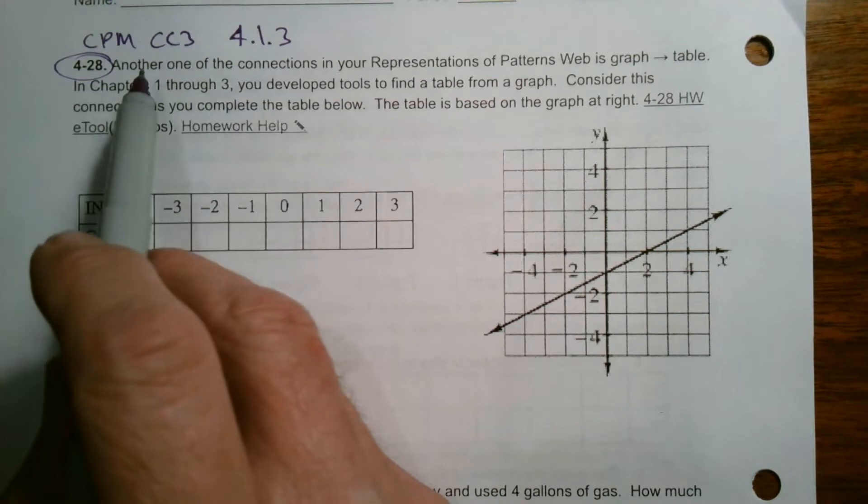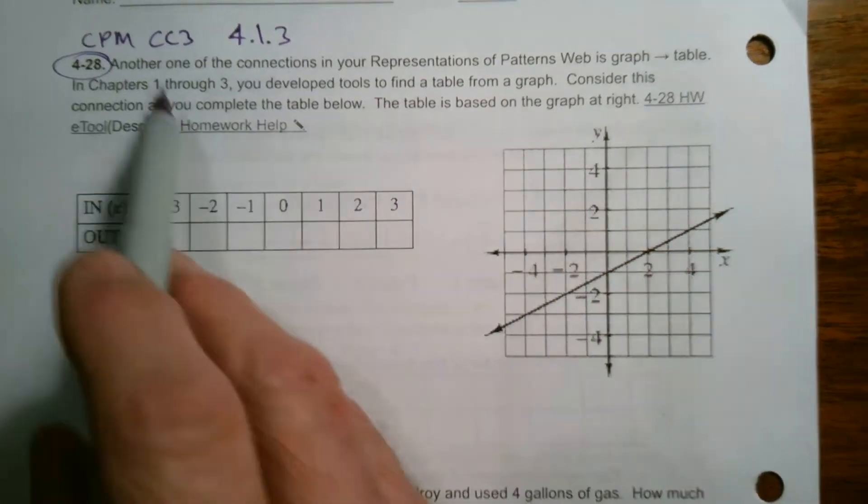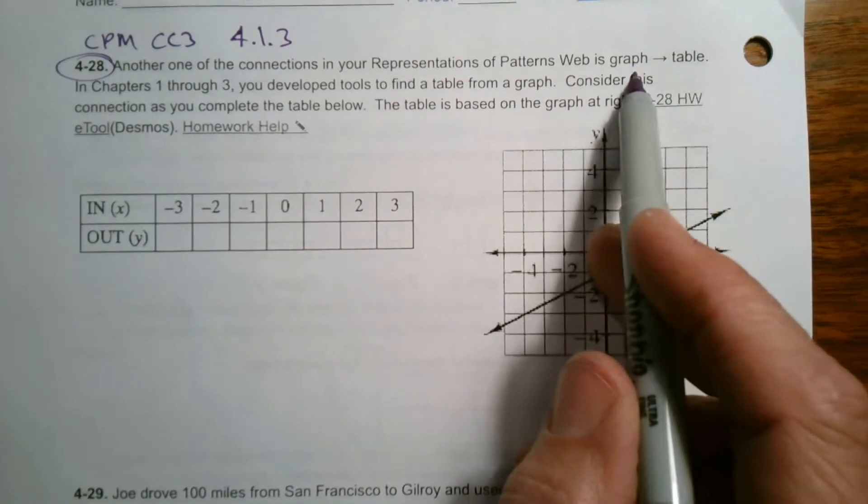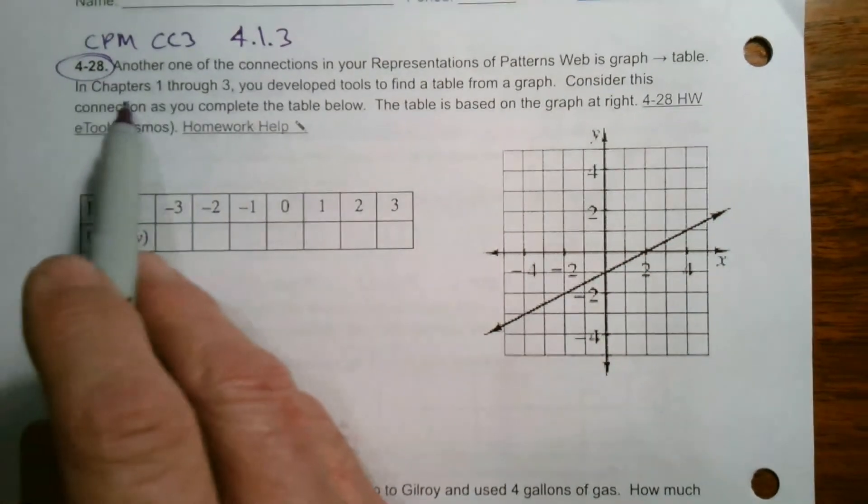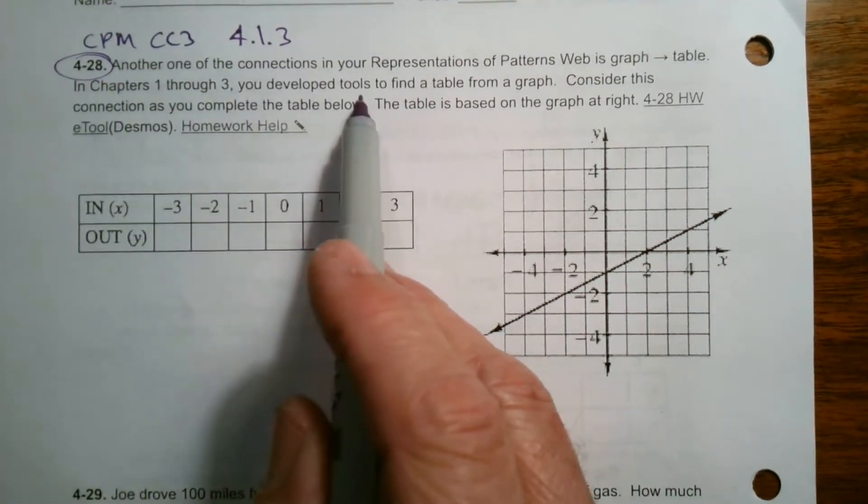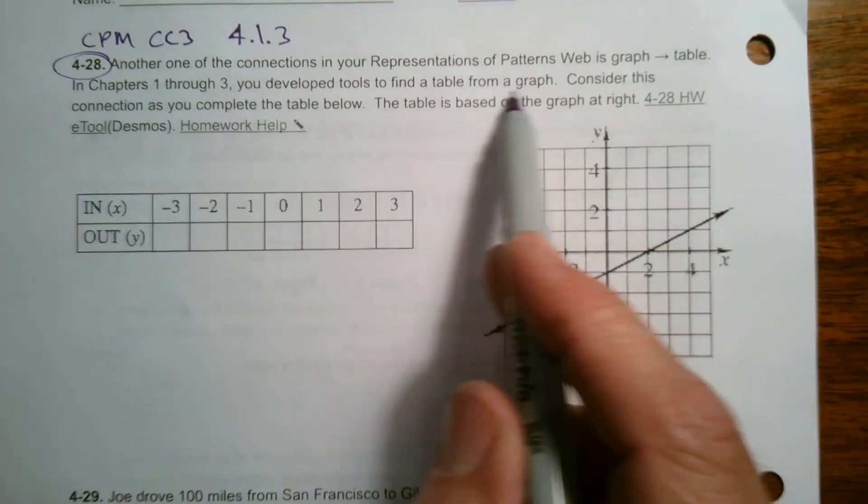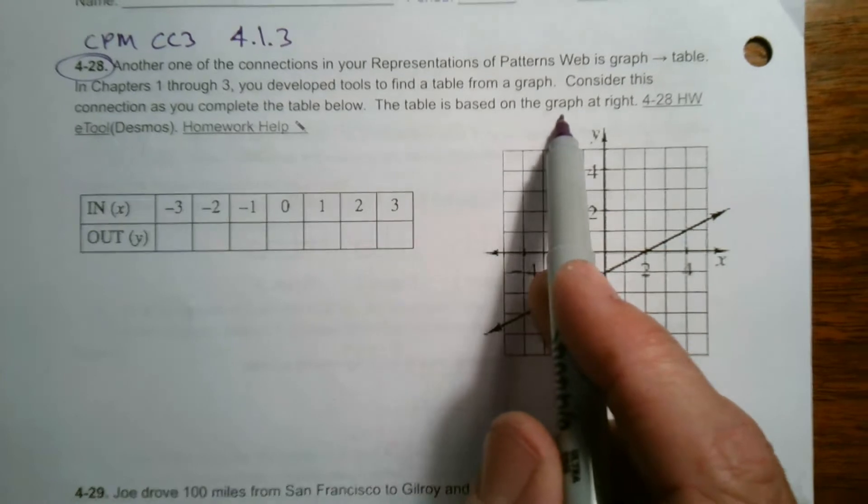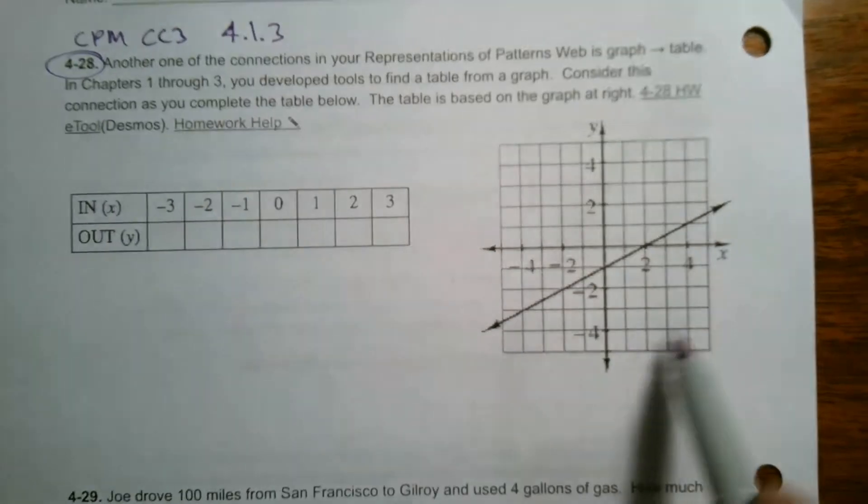I'll read the directions and go from there. Another one of the connections in your representations of patterns web is graph to table. So in chapters one through three, you developed tools to find a table from a graph. Consider this connection as you complete the table below. The table is based on the graph at the right. Here's this graph.